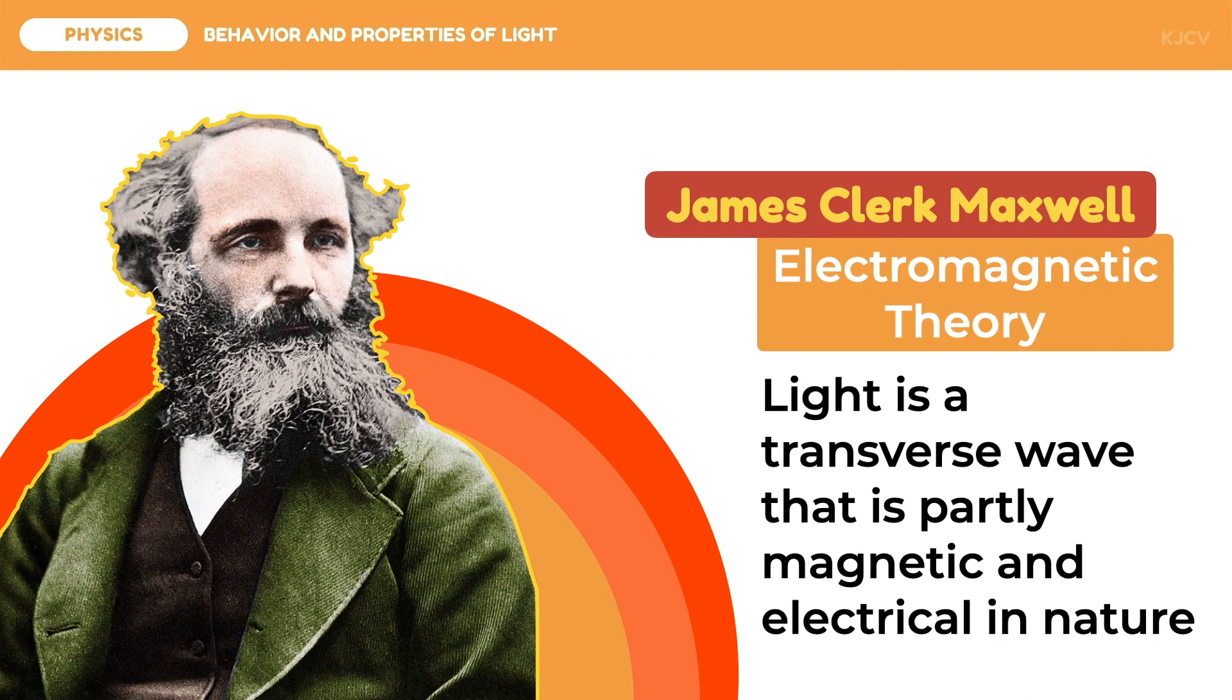The first one is the electromagnetic theory of James Clerk Maxwell. He explained that light is a transverse wave that is partly magnetic and electrical in nature. This means that light as an electromagnetic wave is produced by charges and currents and is propagated in space and time. Another development is the quantum theory of light.